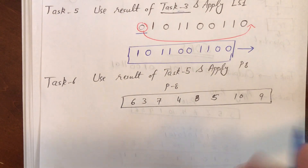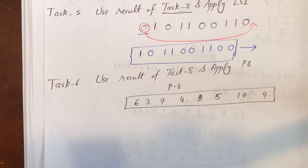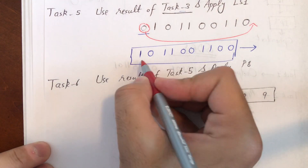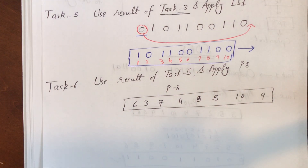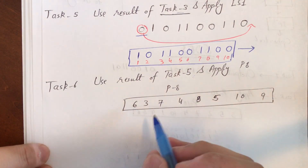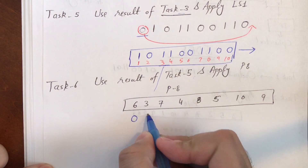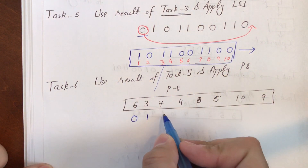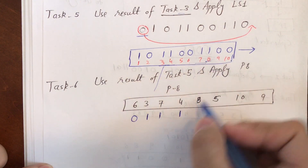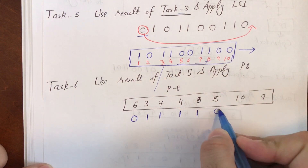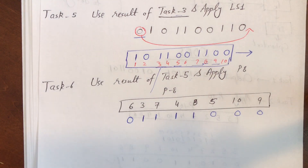Use the Task 5 result and apply P8, rearranging according to the same pattern. Write the numbering 1 through 10. Rearranging: position 6 is 0, position 3 is 1, position 7 is 1, position 4 is 1, position 8 is 1, position 5 is 0, position 10 is 0, position 9 is 0. This is K2 — your second key is ready.